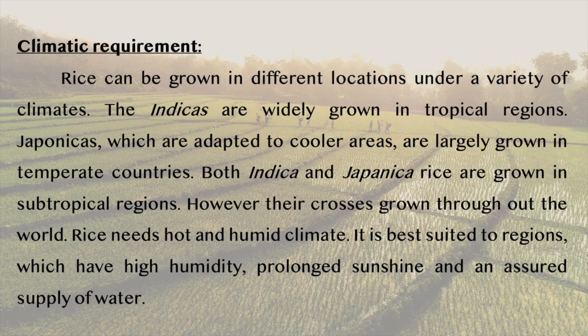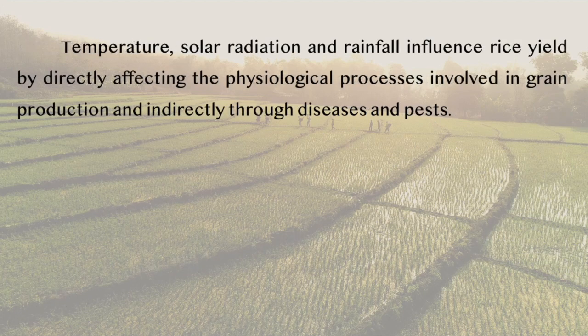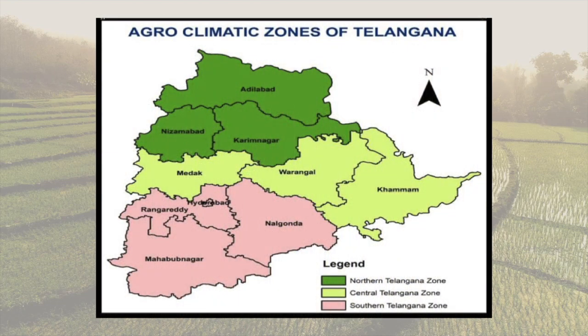Rice needs a hot and humid climate. It is best suited to regions which have high humidity, prolonged sunshine and an assured supply of water. Temperature, solar radiation and rainfall influence rice yield by directly affecting the physiological processes involved in grain production and indirectly through diseases and pests. There are three agro-climatic zones in Telangana: northern, central and southern.